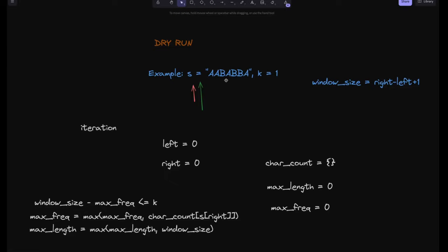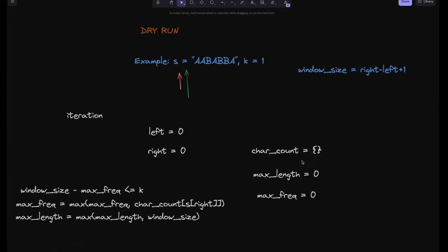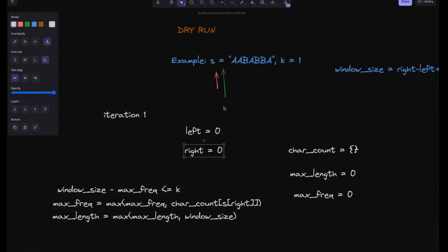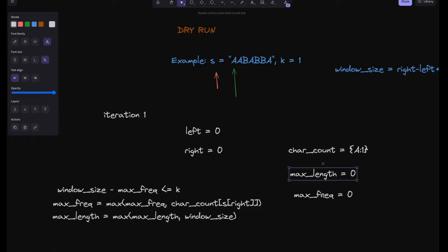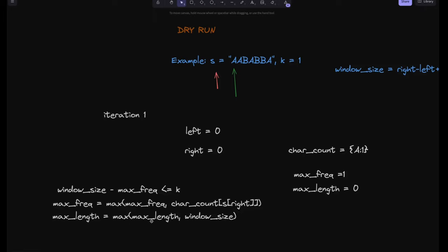Let's look at the diagram. We have the string S = AABABBA and k = 1. The window size is calculated as right minus left plus 1. We initialize left, right, character count, max length, and max frequency all to zero. In iteration 1, left = 0 and right = 0, pointing to A. We update the character count: A = 1. The max frequency is 1. The max length is max(max_length, window_size) = max(0, 1) = 1.